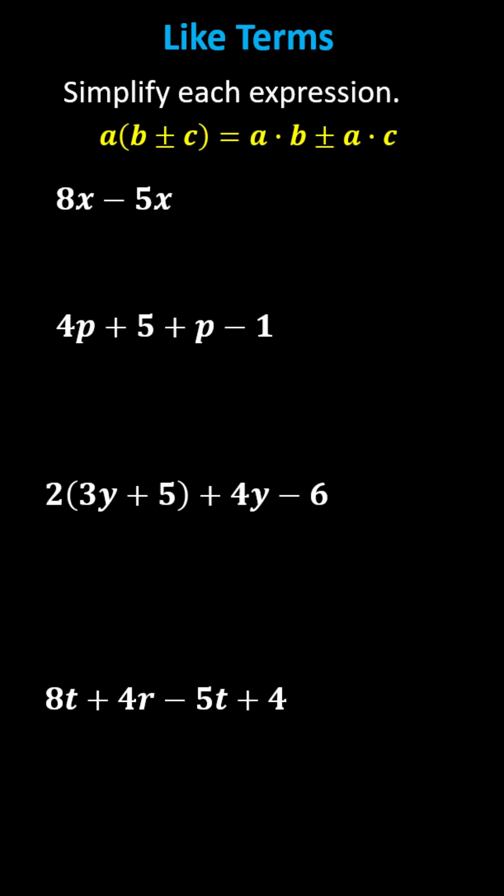To combine like terms, we always add and subtract the coefficients. The variable part remains the same. In practice, we're really using the distributive property in the reverse order. Notice 8x and negative 5x have a common factor of x that could be factored out.